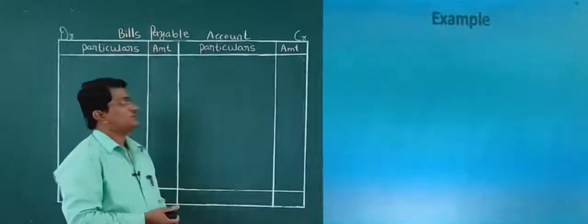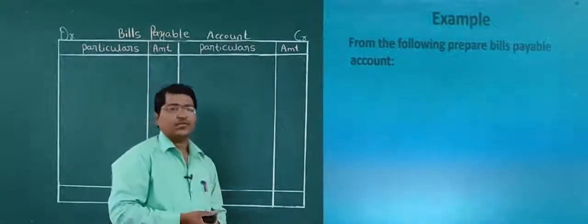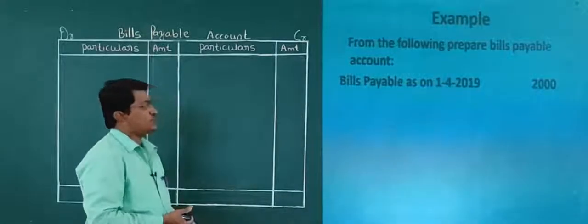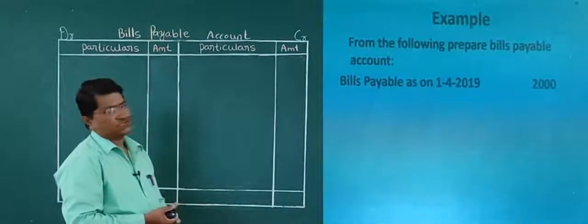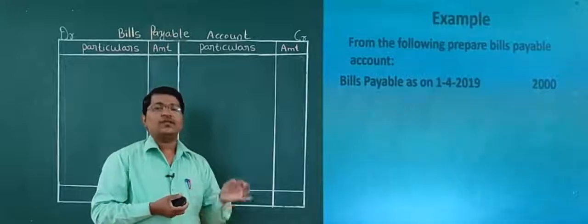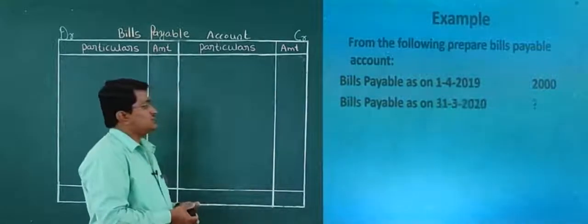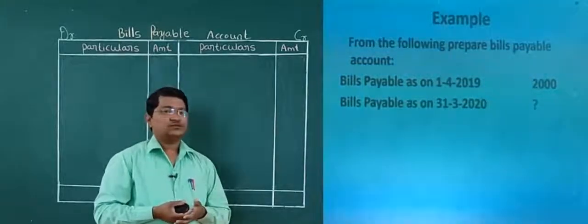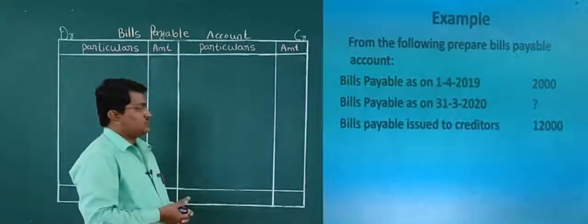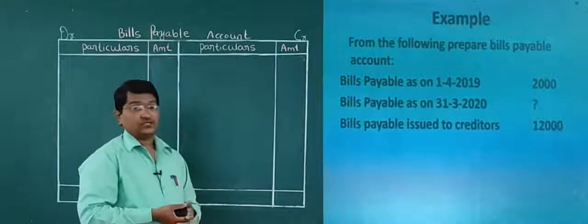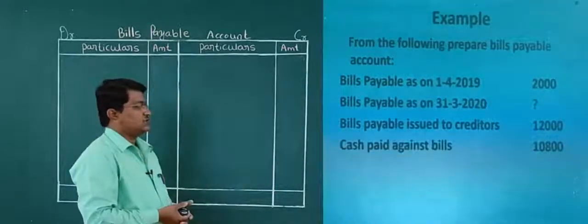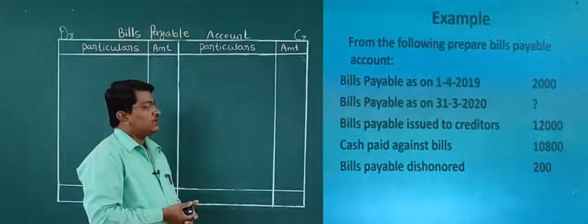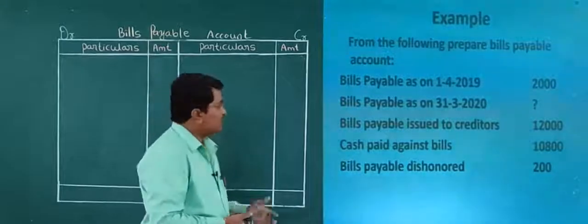Let's see an example: from the following, prepare bills payable account. They have given some information. First, bills payable as on 1st April 2019 — rupees 2000. This is the opening balance of bills payable. Next, bills payable as on 31st March 2020 is a question mark — this is the closing balance to find. Bills payable issued to creditors — rupees 12,000. Cash paid against bill — rupees 10,800. Bills payable dishonored — rupees 2000.